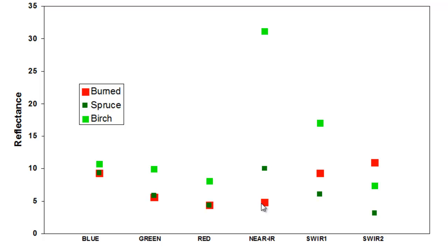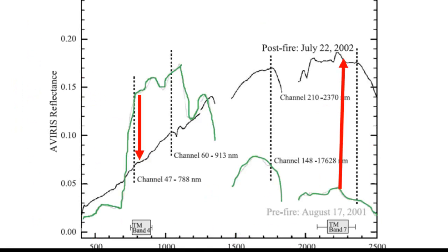In the short-wave infrared, as the canopy is consumed, we have less inner crown shadowing and a drier surface, so there's a substantial increase in short-wave infrared reflectance. We're going to use an index that capitalizes on the decreased near-infrared reflectance and the increased short-wave infrared reflectance following fire. The same relationship was published in a paper using hyperspectral very narrow wavelengths — the same idea applies: dramatic decrease in near-infrared and dramatic increase in short-wave infrared reflectance following fire.